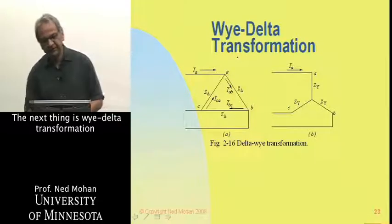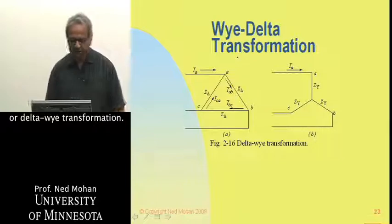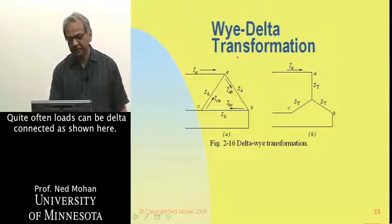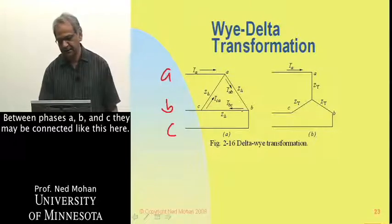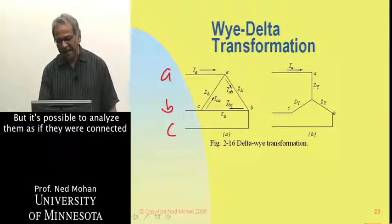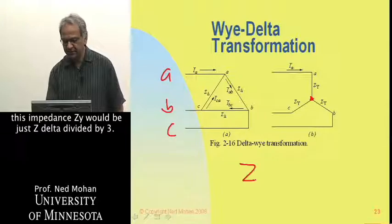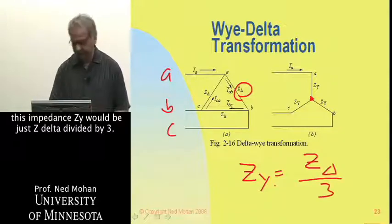The next thing is Y-delta or delta-Y transformation. Quite often, loads can be delta-connected — between phases A, B, and C they may be connected like this. But it is possible to analyze them as if they were connected in a Y. Under balanced conditions, the impedance ZY would be just Z-delta divided by 3.